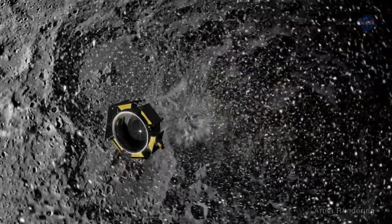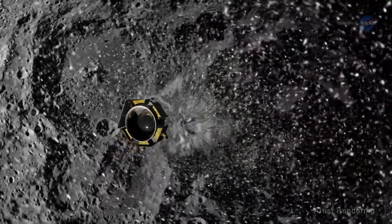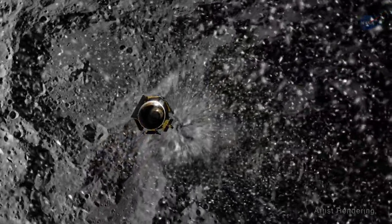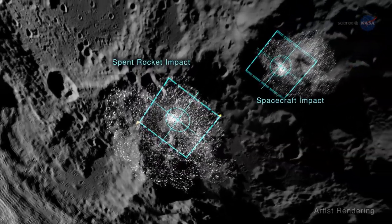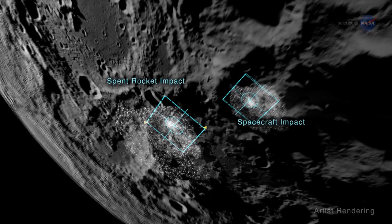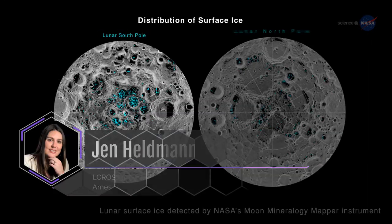The lunar dirt in the plume hadn't seen the sun in over two billion years. In the sunlight, among other metals and gases, we found water, about 5% by weight. Now, we know there's water on the moon.